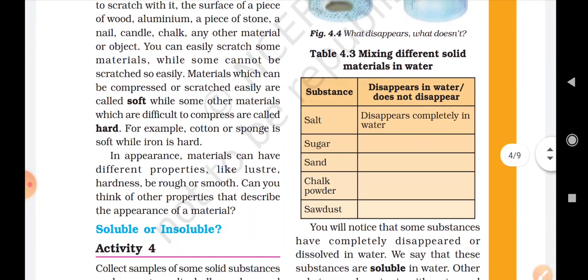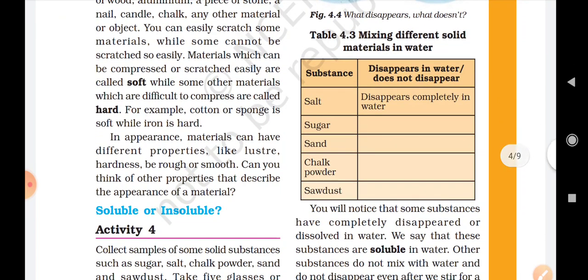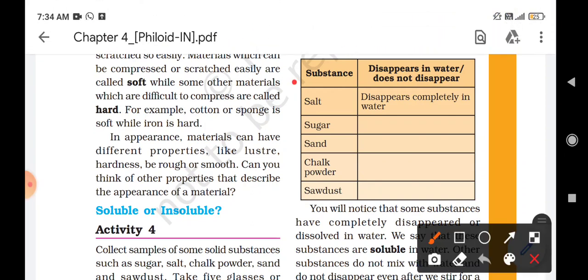Then we have to make table number 4.3 in which it is given mixing different solid materials in water. First column will be of substance that is used to mix and second column is for the observation purpose whether the substance is dissolved in the water or not.